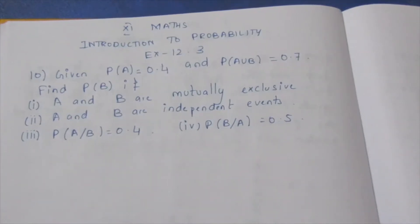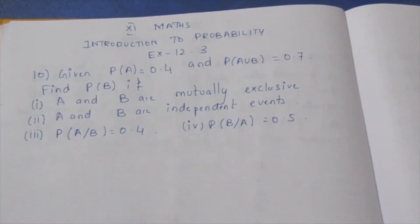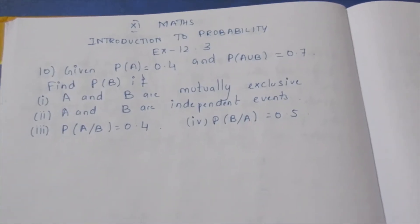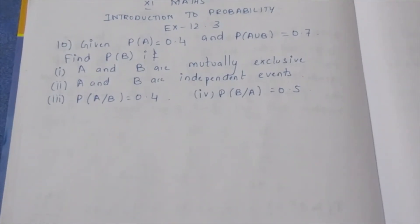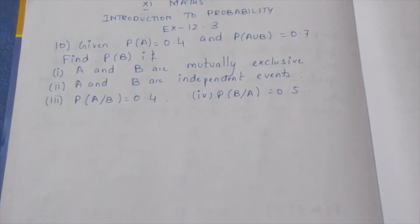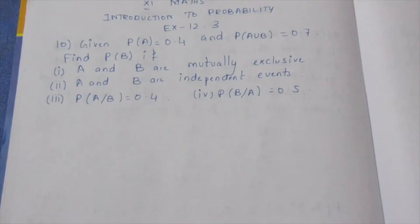Hello viewers, I am Ithli. In this 11th Maths Introduction to Probability Exercise 12.3, 10th sum video. Given P(A) equal to 0.4, P(A∪B) equal to 0.7. Find P(B).